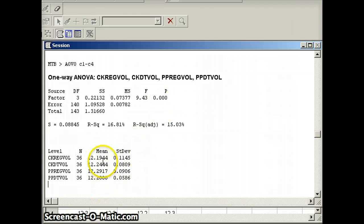Now looking at all these numbers, we have 36 Coke regulars with a mean of 12.1944. Coke diet 12.2444. Pepsi regular 12.2917. And Pepsi diet 12.2. Now these numbers all seem very close to each other. So why would we have gotten the p-value of basically 0? It's because the standard deviations are so small.